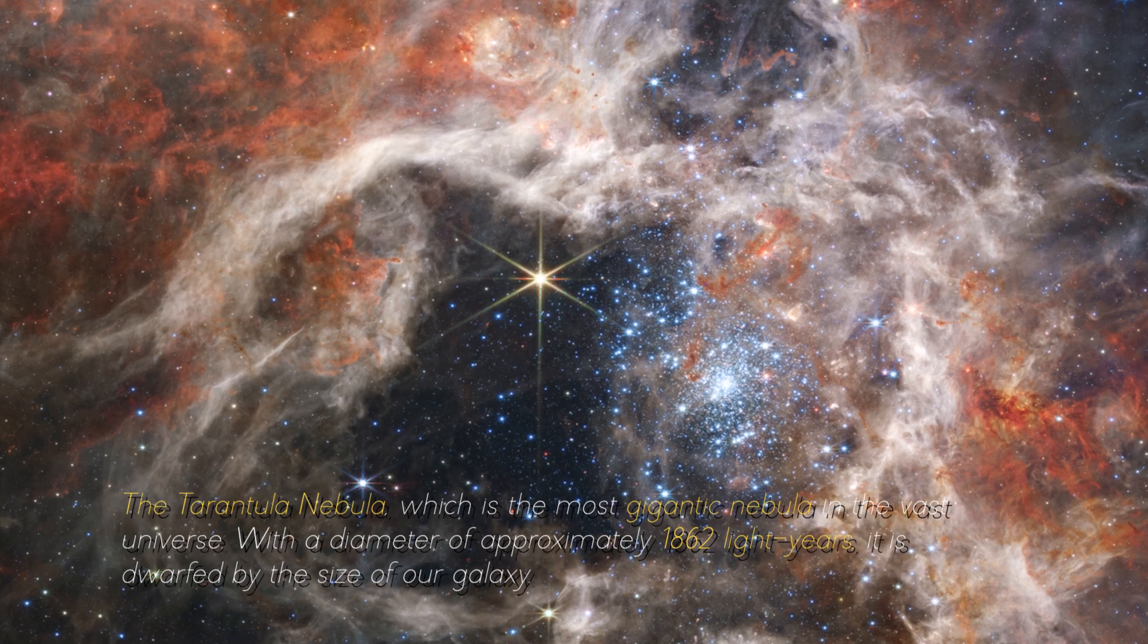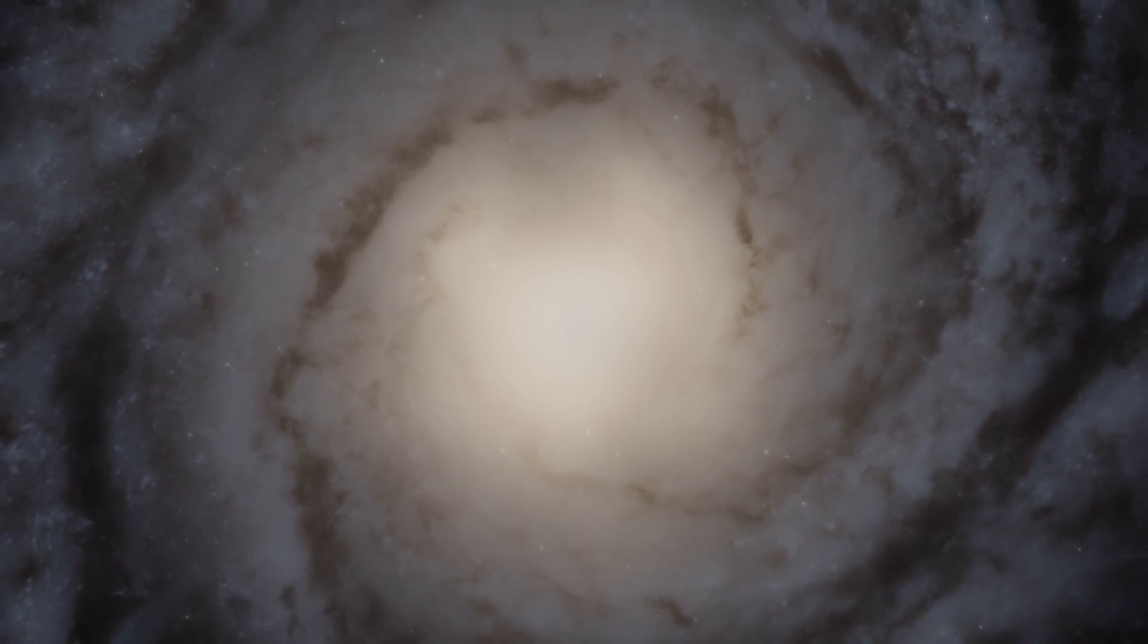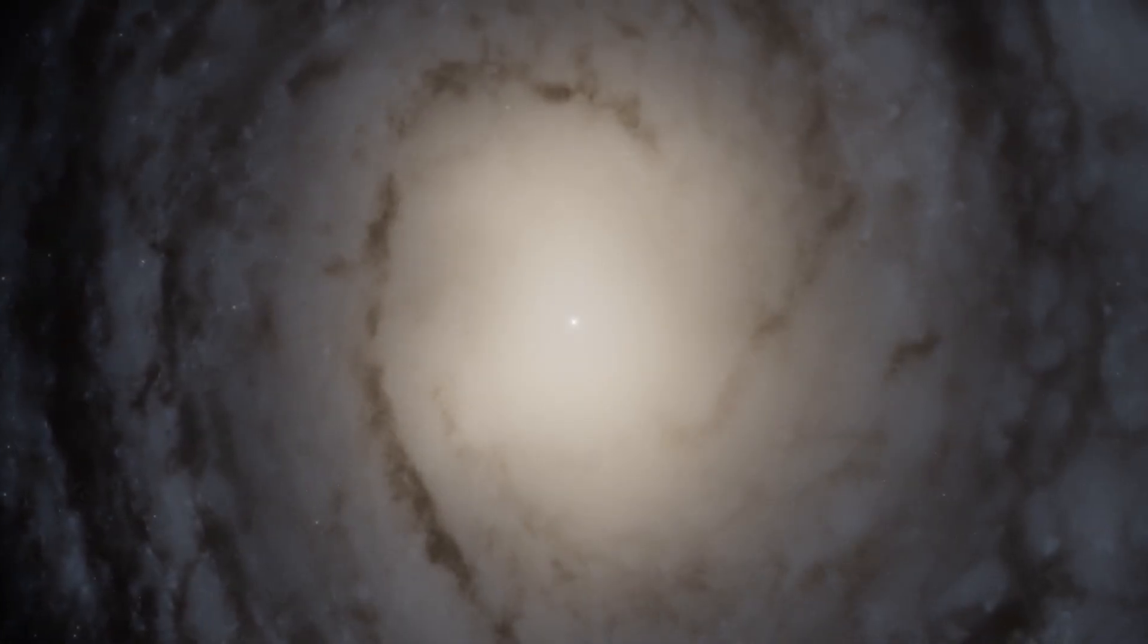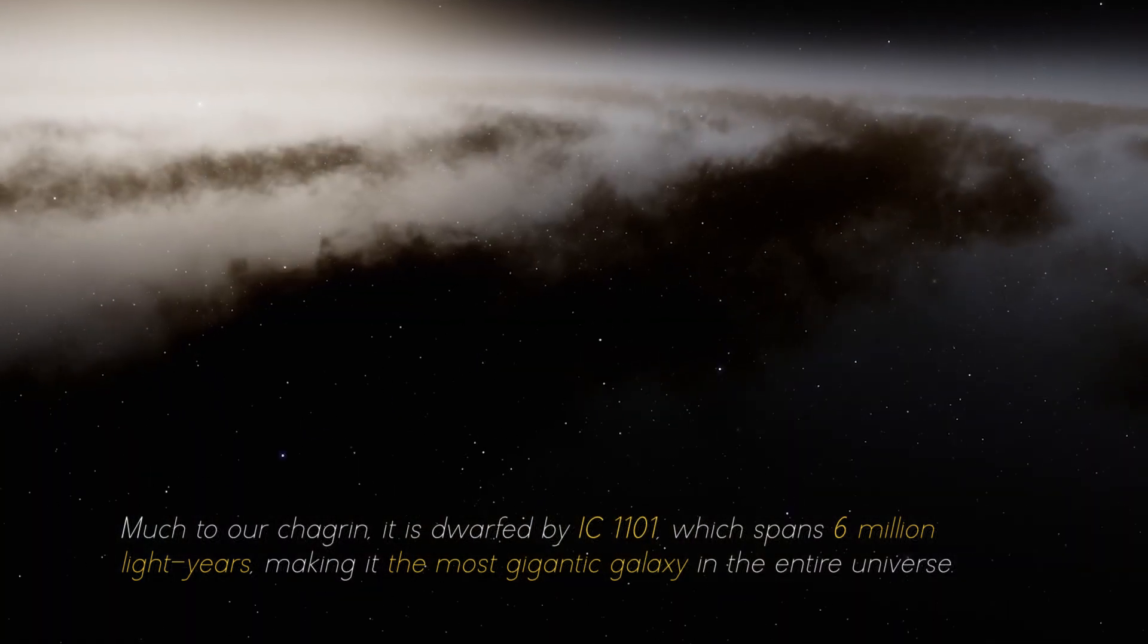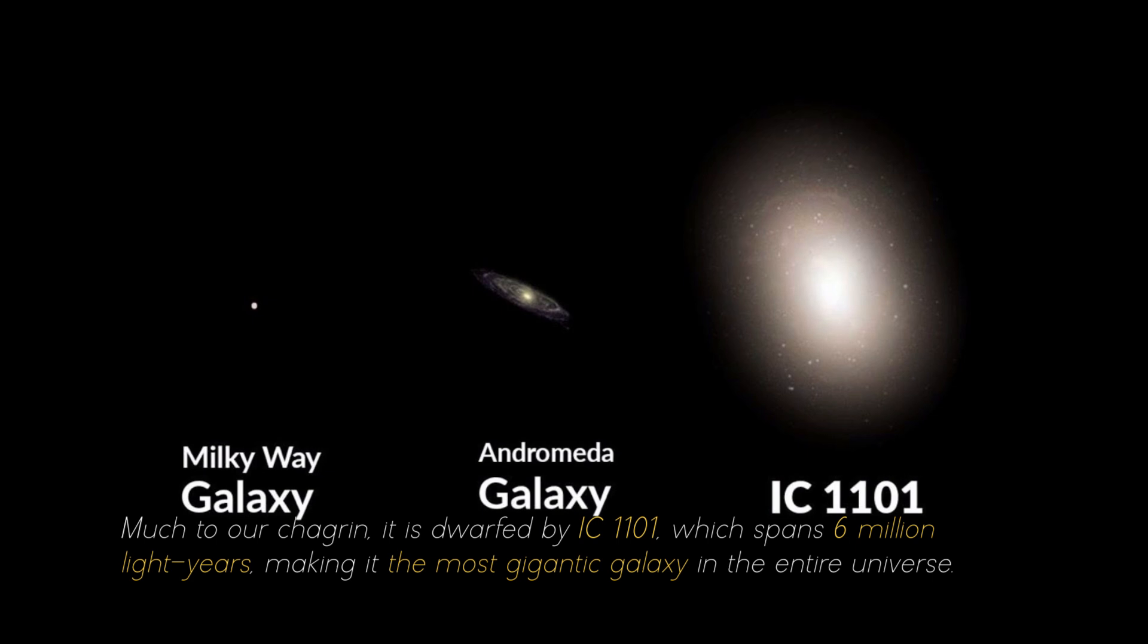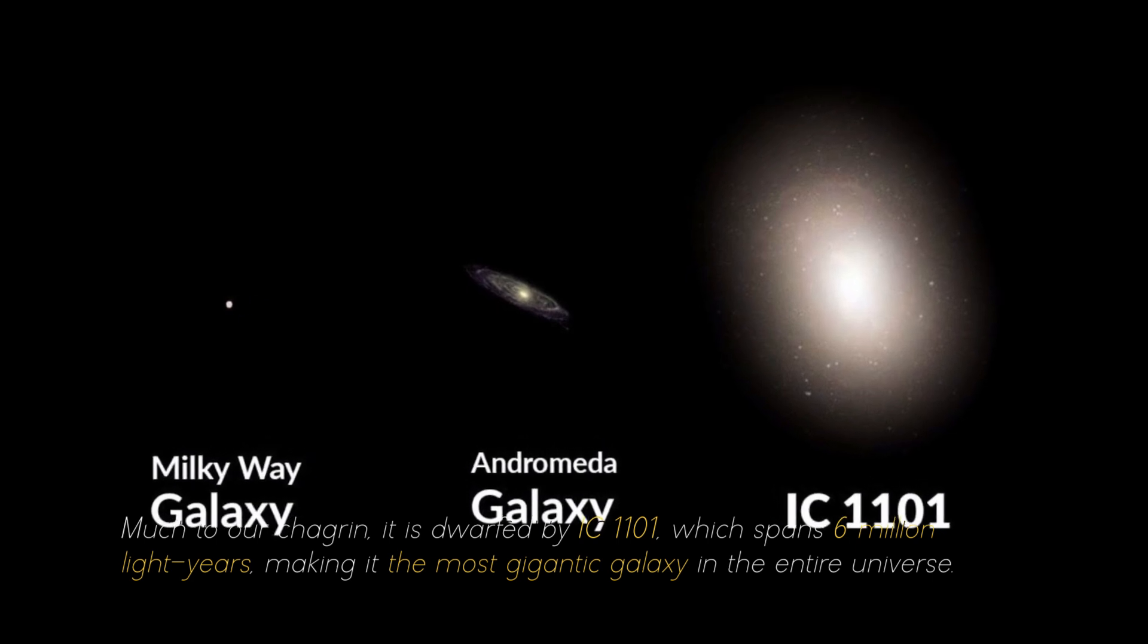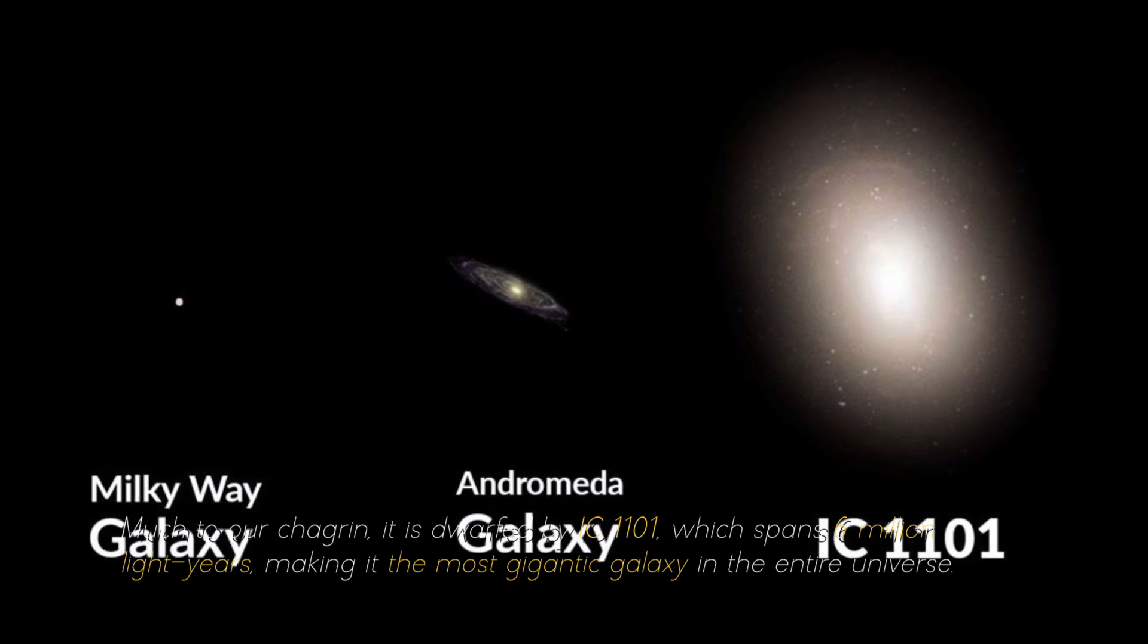It is dwarfed by the size of our galaxy, which spans some 105,700 light years. Much to our chart range, it is dwarfed by the IC 1101, which spans 6 million light years, making it the most gigantic galaxy in the entire universe.